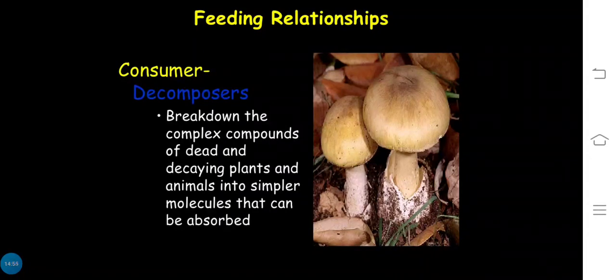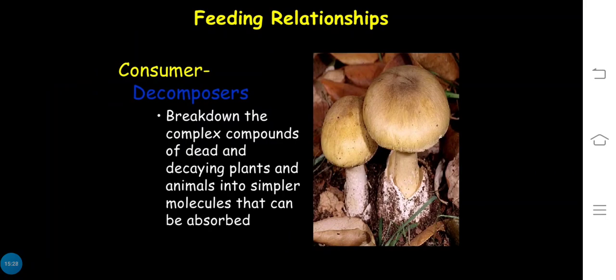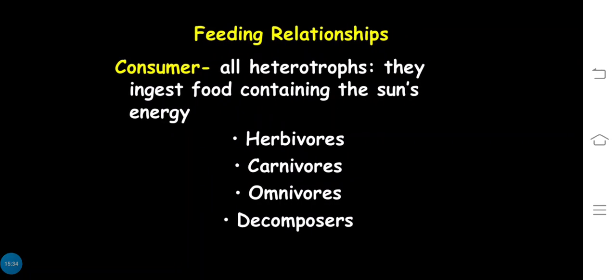Decomposers work on dead and decaying plant and animal material, breaking down the complex organic forms into simple forms that can be easily absorbed. This nutrient cycling is essential to the ecosystem.